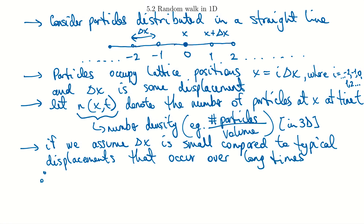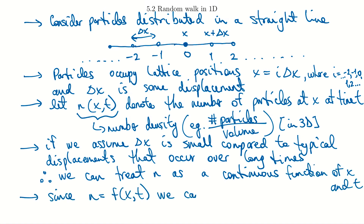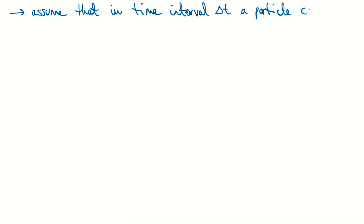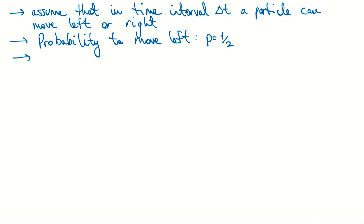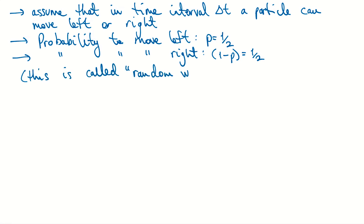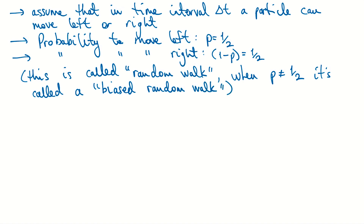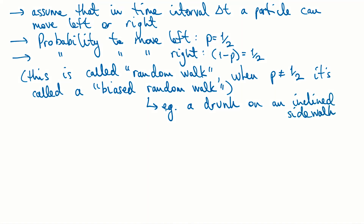If n is a continuous function of x and t, we can define our partial derivatives. Now for particles moving: in a time interval Δt, a particle can move left or right. The probability to move left is p = 1/2, and to the right is 1 − p = 1/2. This is what we call a random walk. When p is not equal to 1/2, it's called a biased random walk — for example, a drunk stumbling down an inclined sidewalk would naturally be biased toward walking down the slope.